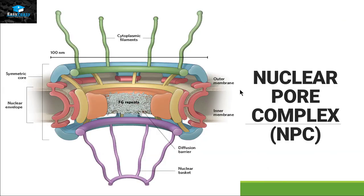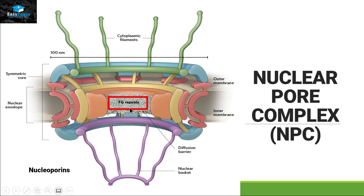This is a picture of the nuclear pore complex. The outer membrane and inner membrane are visible, and the nuclear pore complex is present at the junction of the two membranes. All the proteins making up this nuclear pore complex are called nucleoporins, and they have FG repeats present in the center. FG stands for the amino acids phenylalanine and glycine, present repetitively, making a mesh-type structure.